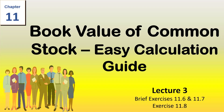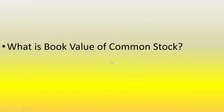In today's lecture we will learn how to calculate book value per share of a common stock. Book value of common stock refers to the net value of a company's assets that are attributable to its common shareholders. We have two types of stockholders: common stockholders and preferred stockholders. Book value is exclusively related to the common stockholders.